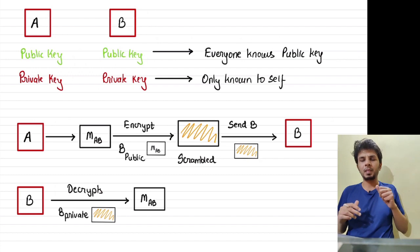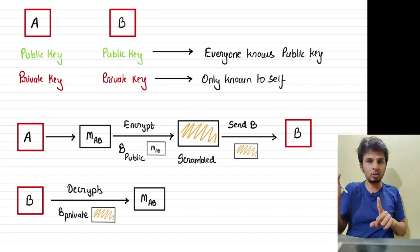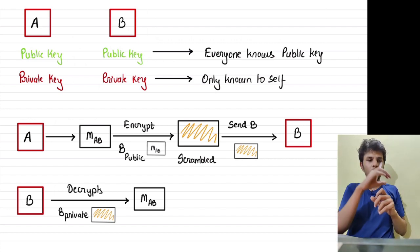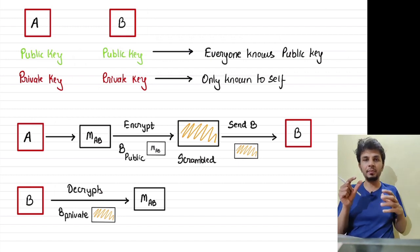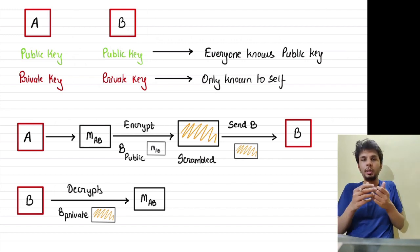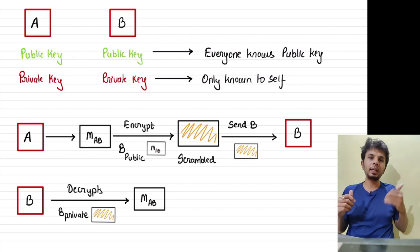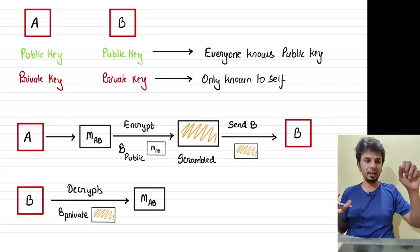The flow is simple. A wants to send a message to B. A encrypts the message with B's public key, because A does not have access to B's private key but does have access to B's public key. Post encryption, the plaintext becomes really scrambled and unreadable. This scrambled message — which looks like garbage — is sent over to B, and B uses its own private key to decrypt and extract the original message.